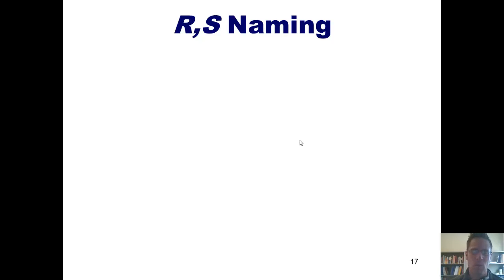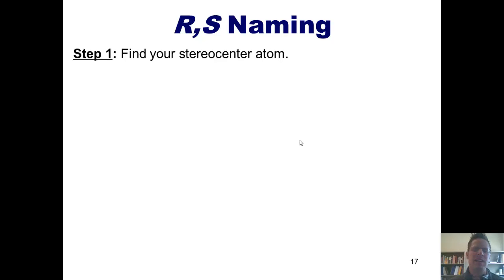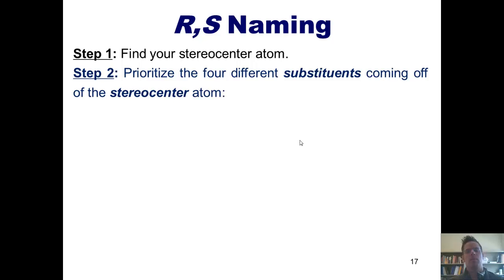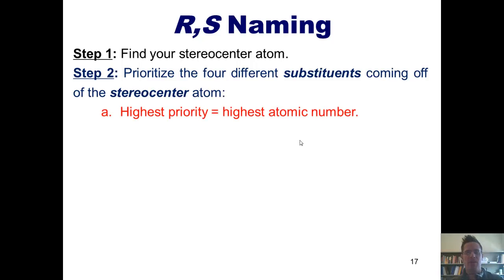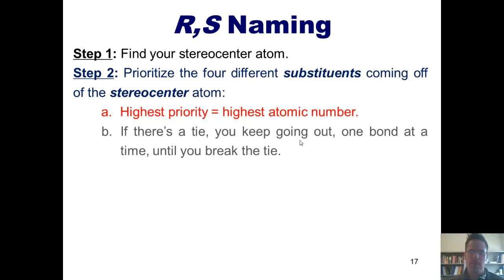How does the RS Naming System work? Step 1: find your stereocenter atom. Step 2: prioritize the four different substituents coming off of the stereocenter atom. To prioritize them, you start at your stereocenter and go out one atom at a time. Highest priority equals the atom that has the highest atomic number. If there's a tie, you go out one more atom and so forth until you break the tie.